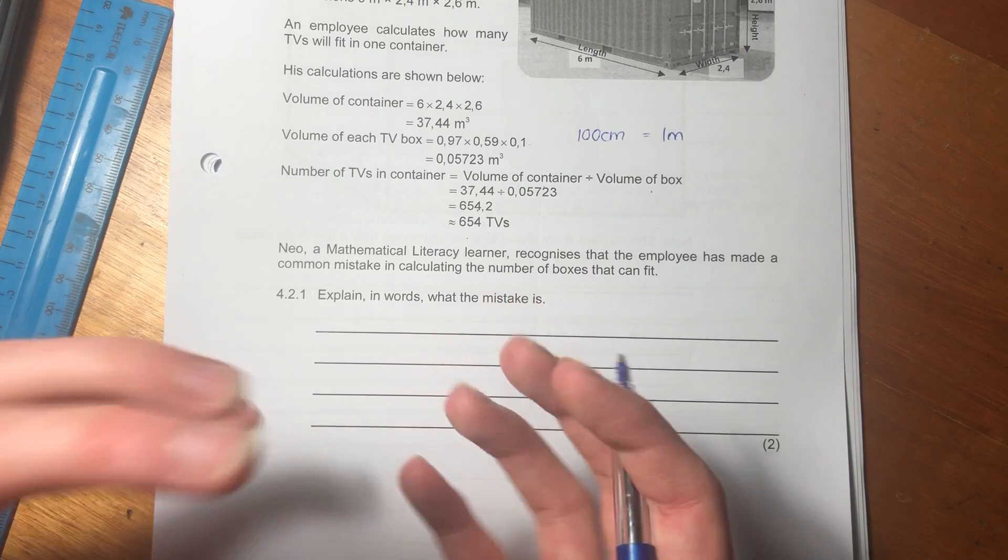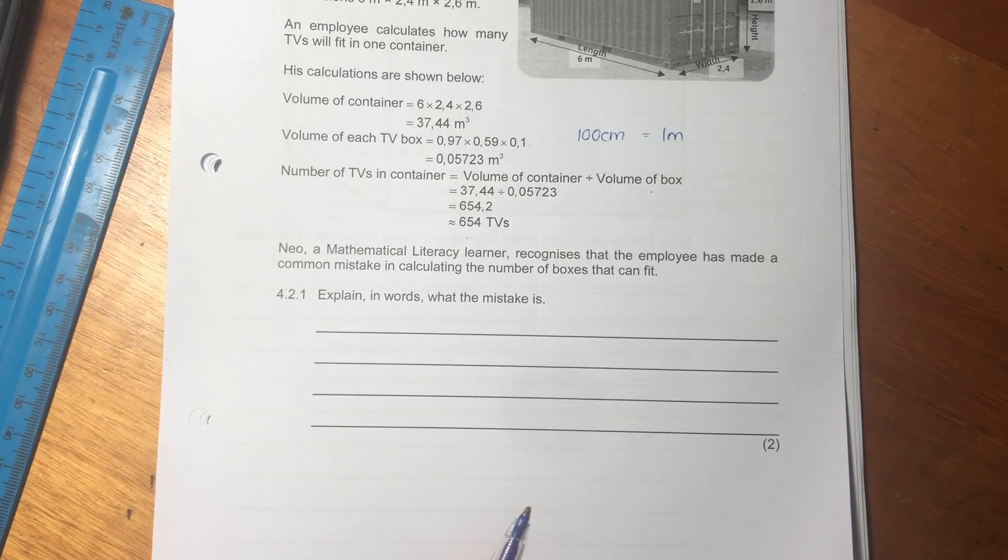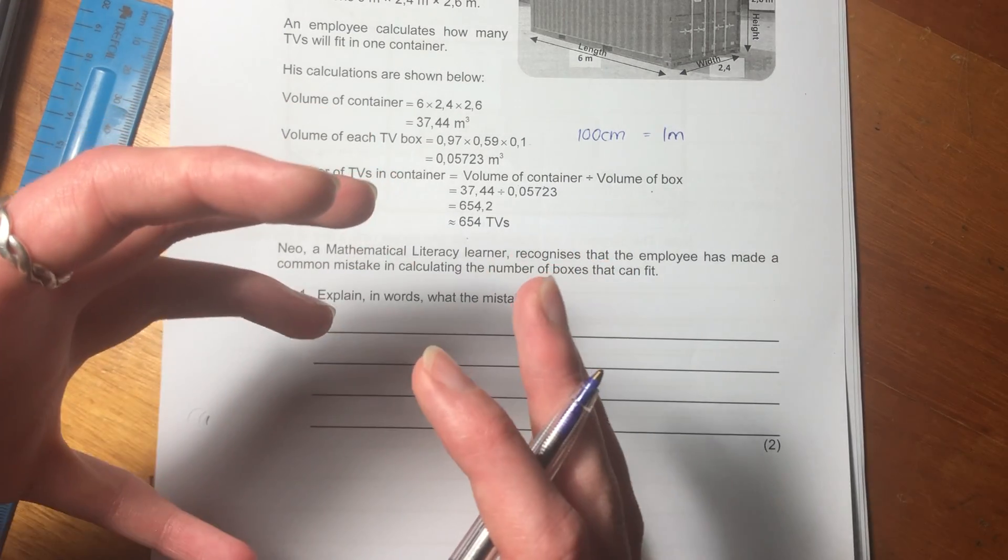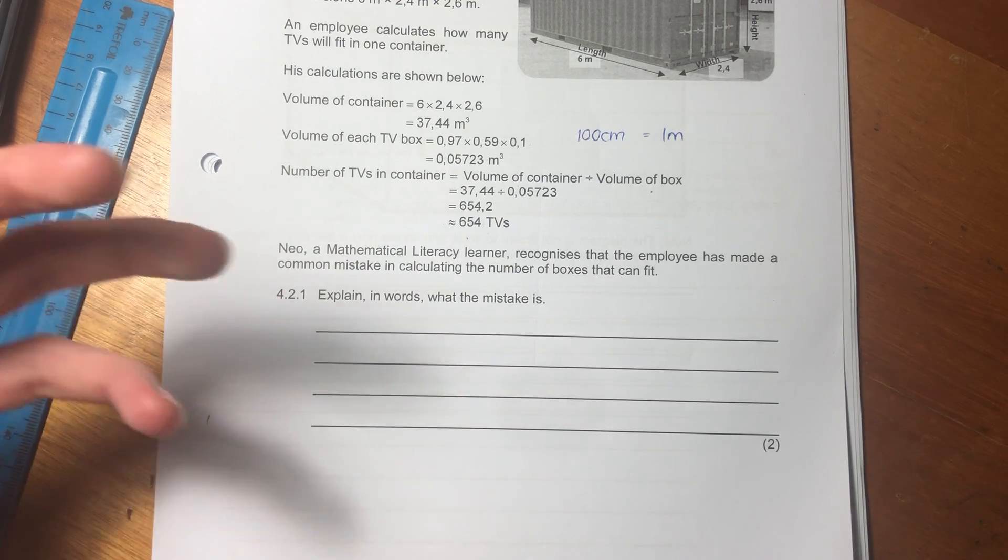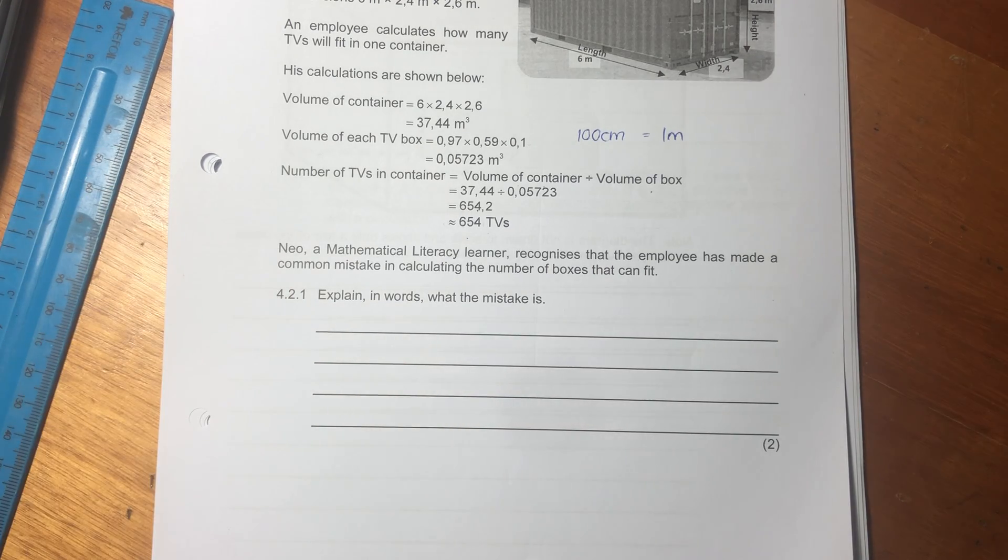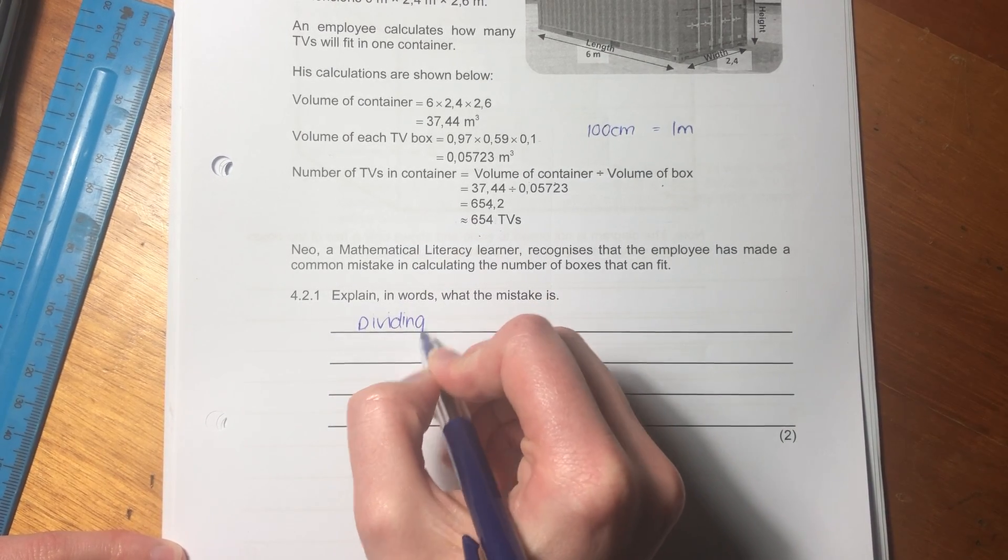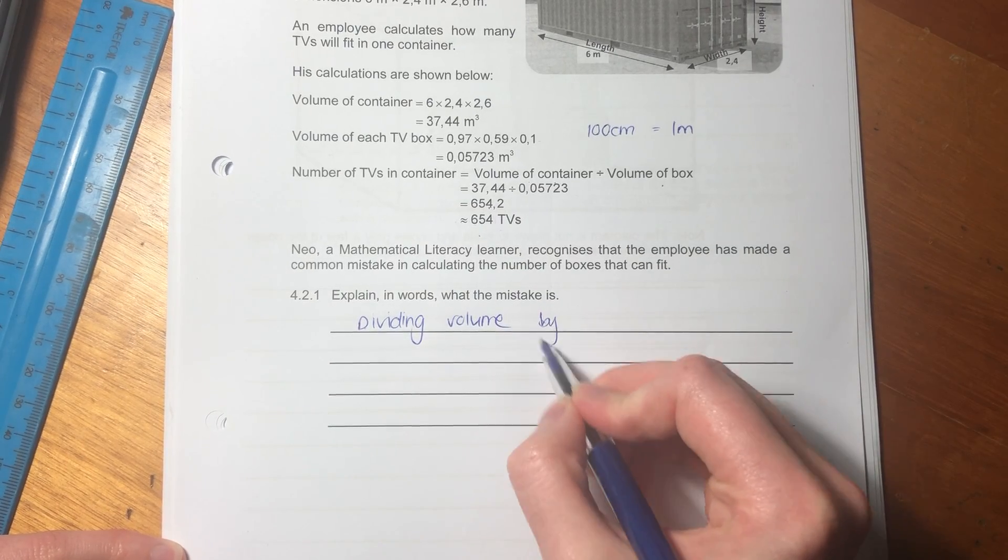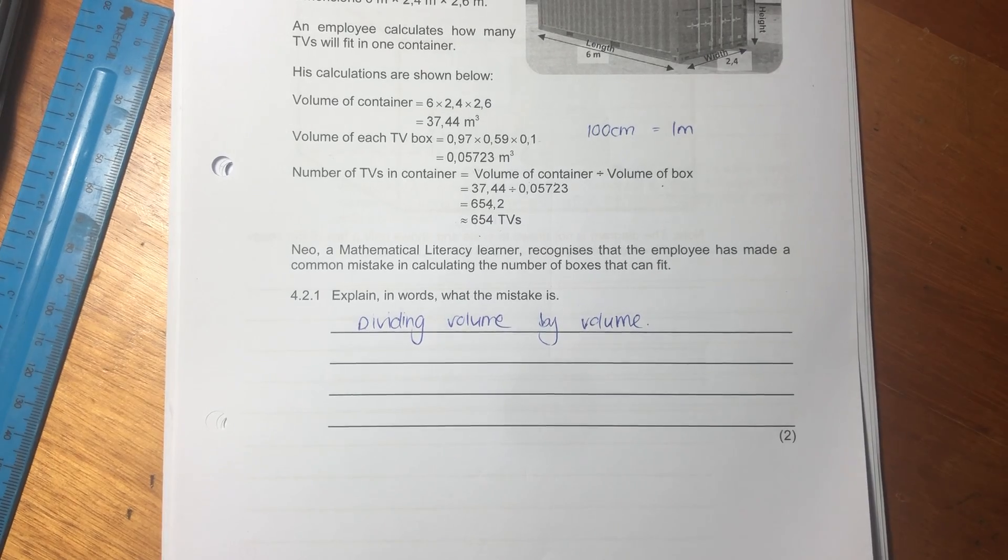So the only time you can say volume divided by volume is when you're looking at something that can take on the shape of the thing that it's put into, like water, like a liquid. But you can't do that often with solids, like a box. I hope that makes sense. It's a little bit abstract, but it's quite an important thing to look at.